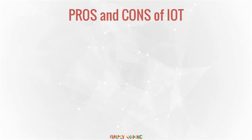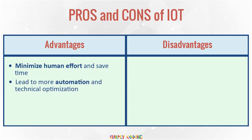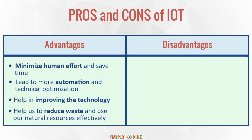The advantages of IoT are that it will minimize human effort and save time. There will be more and more devices which will be automated and controlled centrally. For example, if a car is speeding, it will automatically raise an alarm early to avoid accidents. It will lead to more automation and technical optimization, helping in improving the technology, like self-driven cars. It will help us reduce waste and use our natural resources effectively — for example, by using moisture sensors, a farmer can decide how much to water the plants.